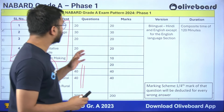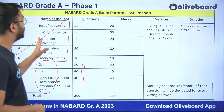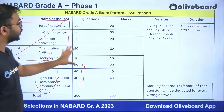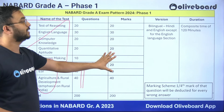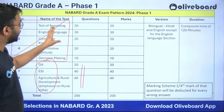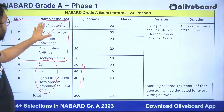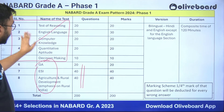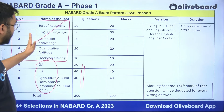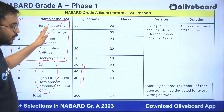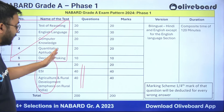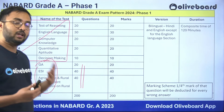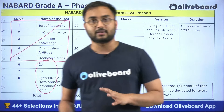We will understand the cutoffs for each Phase 1 section. The total marks allocation: reasoning, computer knowledge, quant, and GA are for 20 marks each; English is for 30 marks; decision making is for 10 marks; and ESI and ARD — which are the pillars of NABARD — are for 40 marks each.